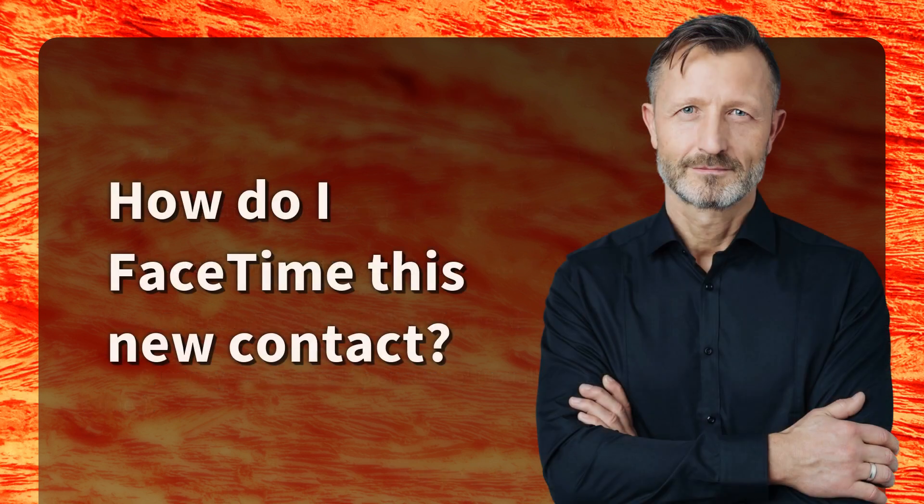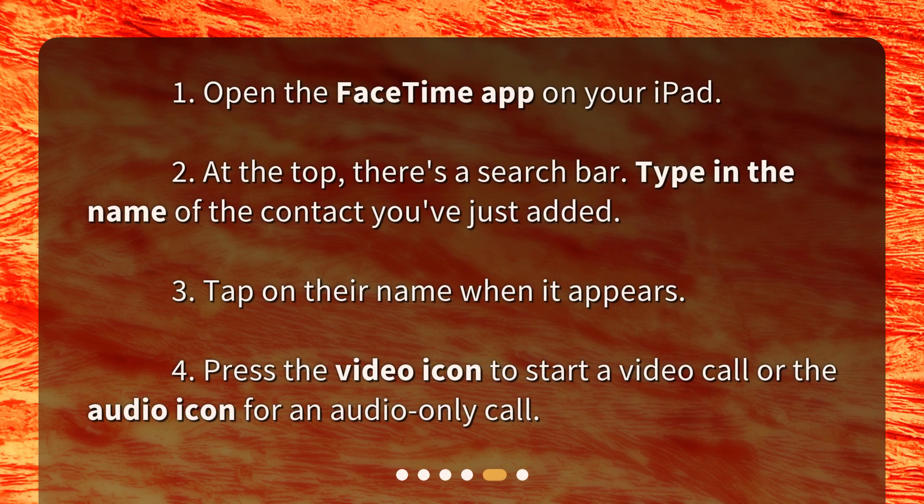How do I FaceTime this new contact? Step 1: Open the FaceTime app on your iPad. Step 2: At the top, there's a search bar — type in the name of the contact you've just added. Step 3: Tap on their name when it appears. Step 4: Press the video icon to start a video call, or the audio icon for an audio-only call.